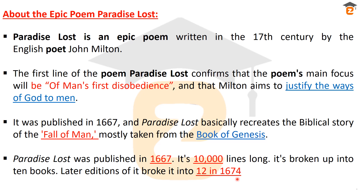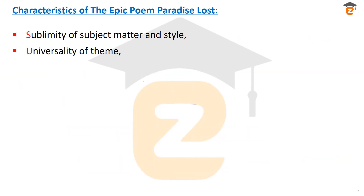Now let's look at the characteristics. First, we have sublimity of subject matter and style — sublimity is related to the subject matter where Milton is talking about the fall of man and how he justifies the ways of God to man. That's why this is the subject matter of the epic poem. Next we have universality of theme — there are many themes involved, including disobedience, war, and revolt against God.